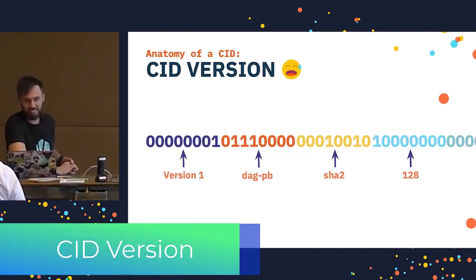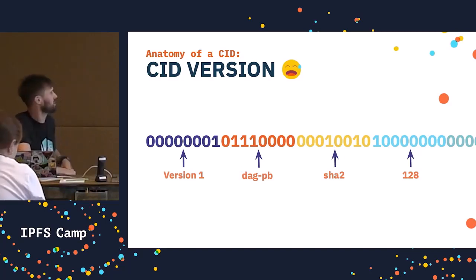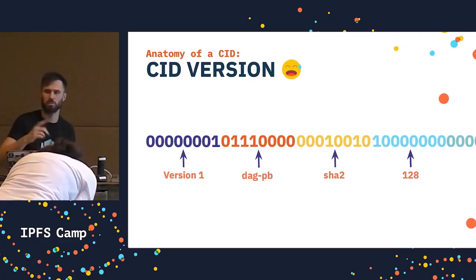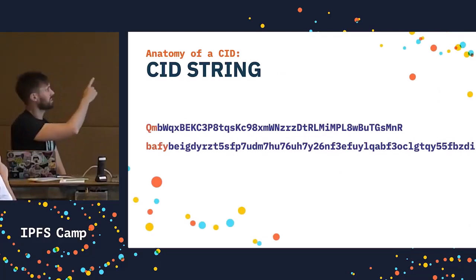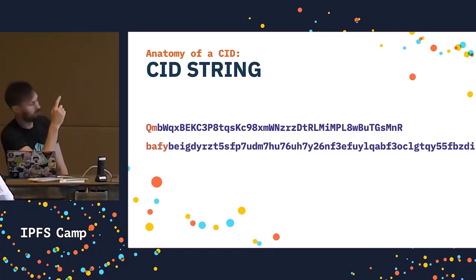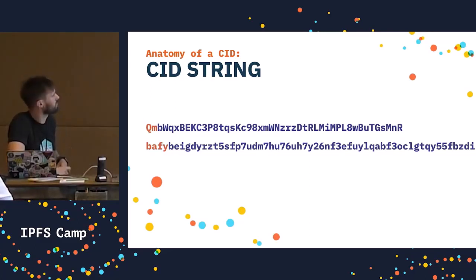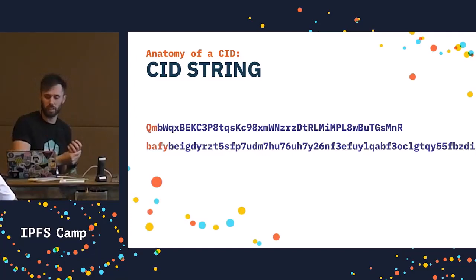There are two different CID versions, which is mildly frustrating. Hopefully going forward you'll see version 1 as the main version. There's version 0 and version 1 — it's just another prefix added to the front. If you've used IPFS before, you might be used to seeing version 0 CIDs, which begin with 'Qm'. Version 1 CIDs begin with 'bafi' or 'bafk' sometimes. CIDs are binary data, and 0s and 1s make for really long strings when printed out. So we use a higher number-based encoding to make them shorter and easier to print out and recognize in string form.